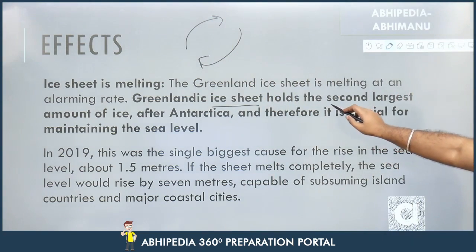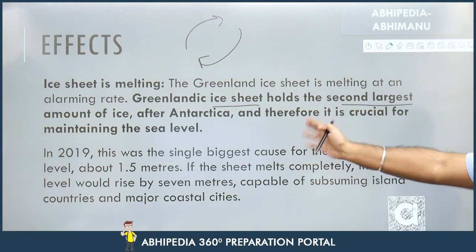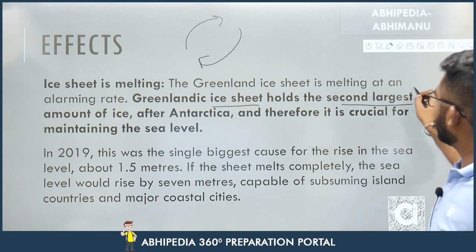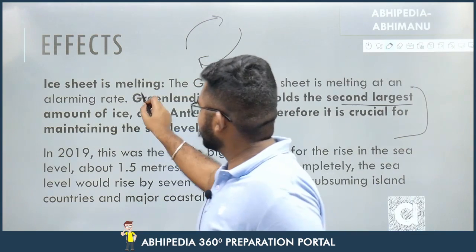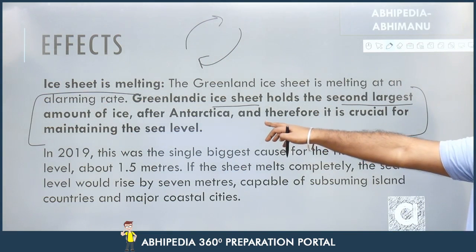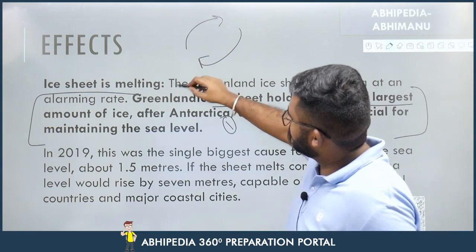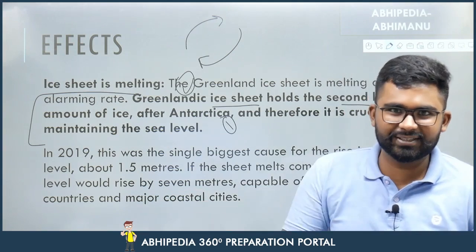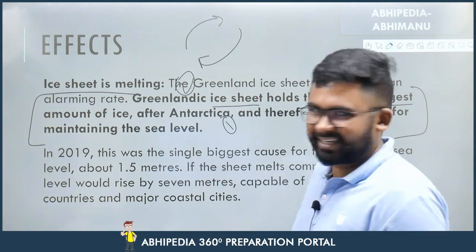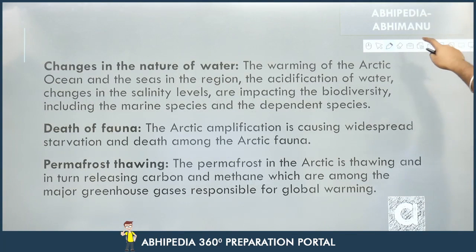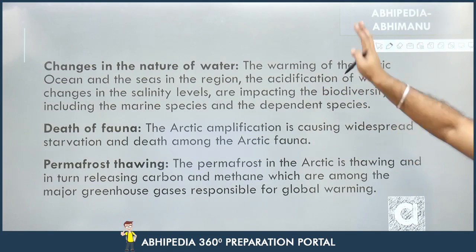The Greenland ice sheet holds the second largest amount of ice after Antarctica, and is therefore crucial for maintaining sea levels. An exam-worthy point: Antarctica is the largest ice sheet (number one), and Greenland is number two. This is a side-quest fact within this topic — like side quests in video games.